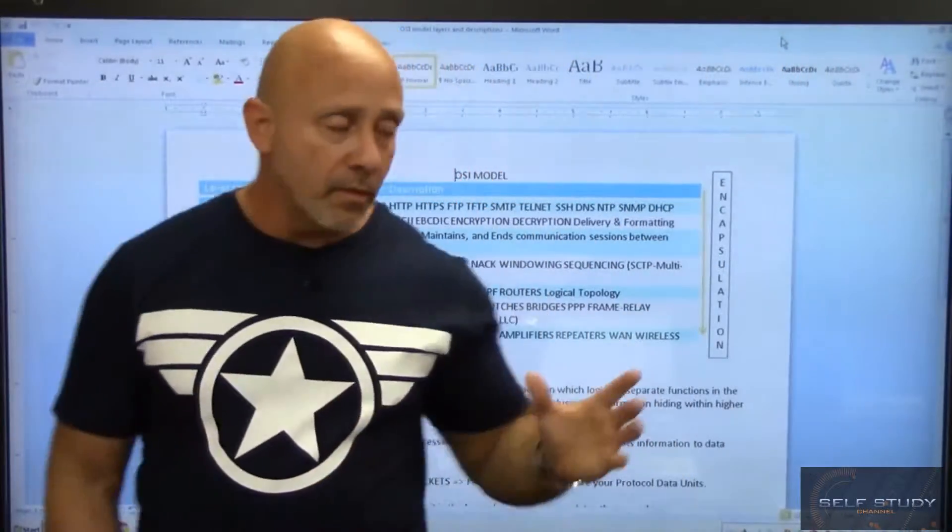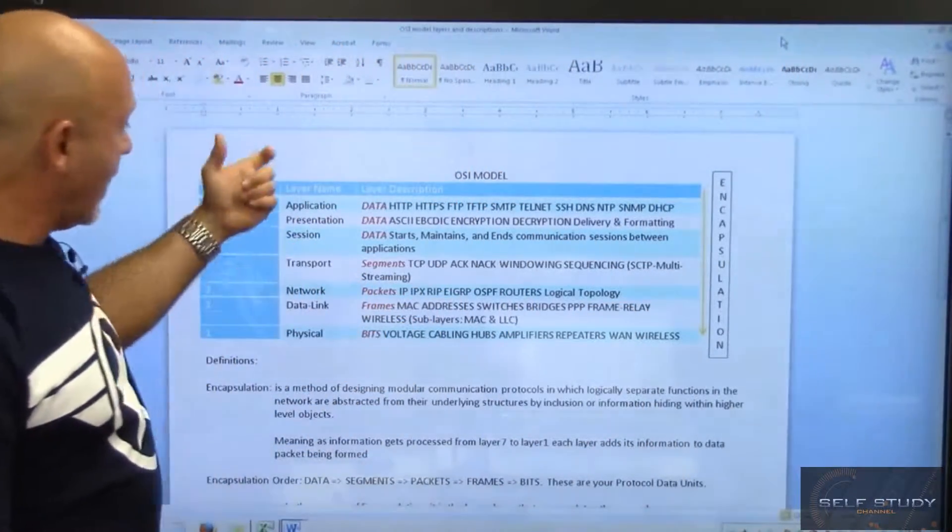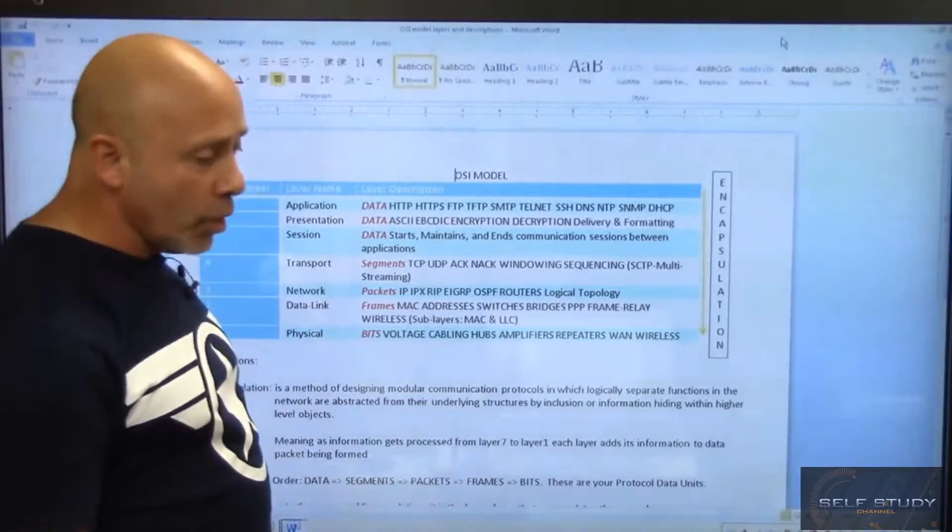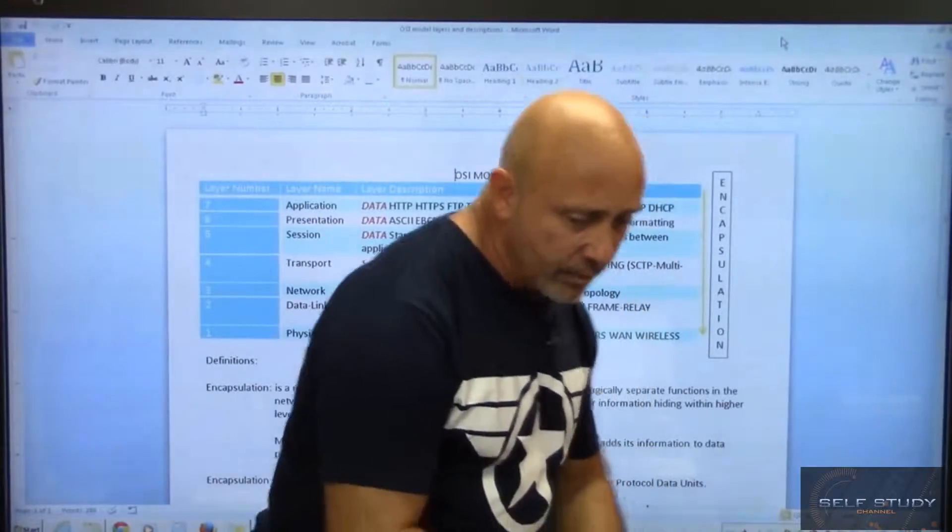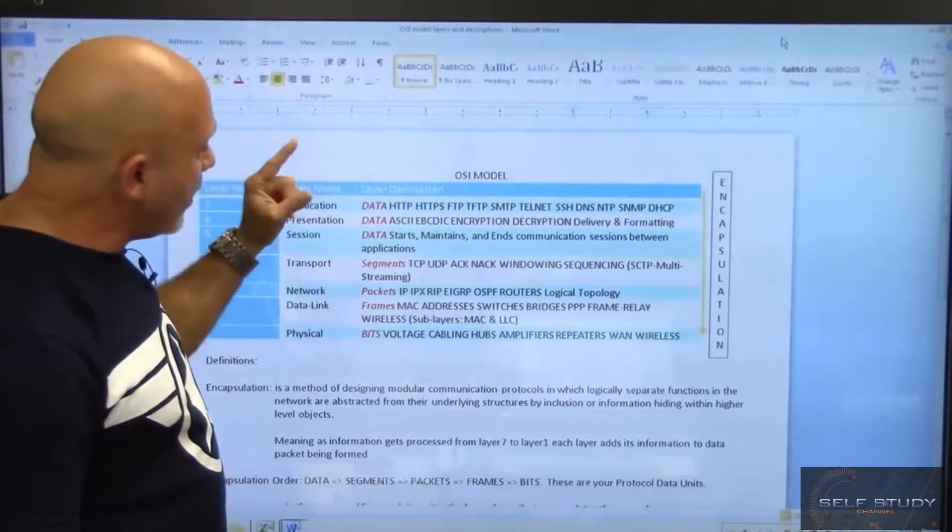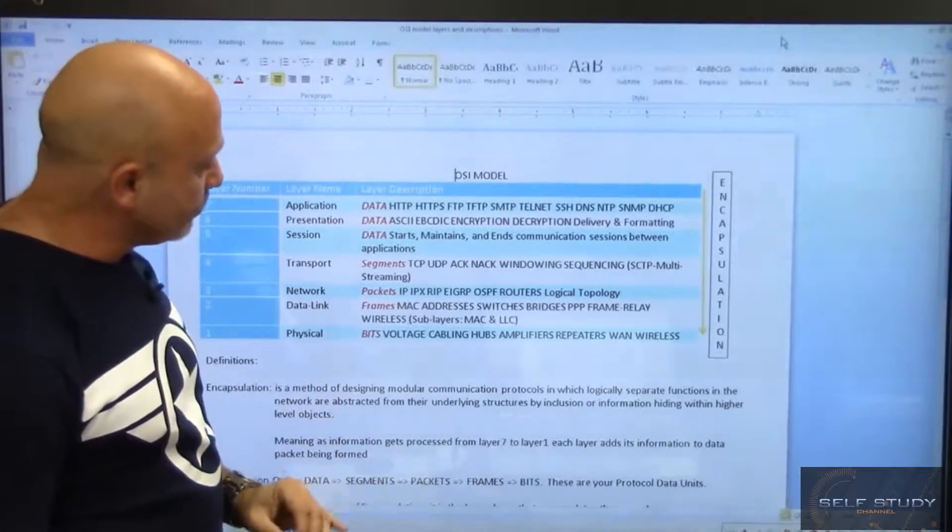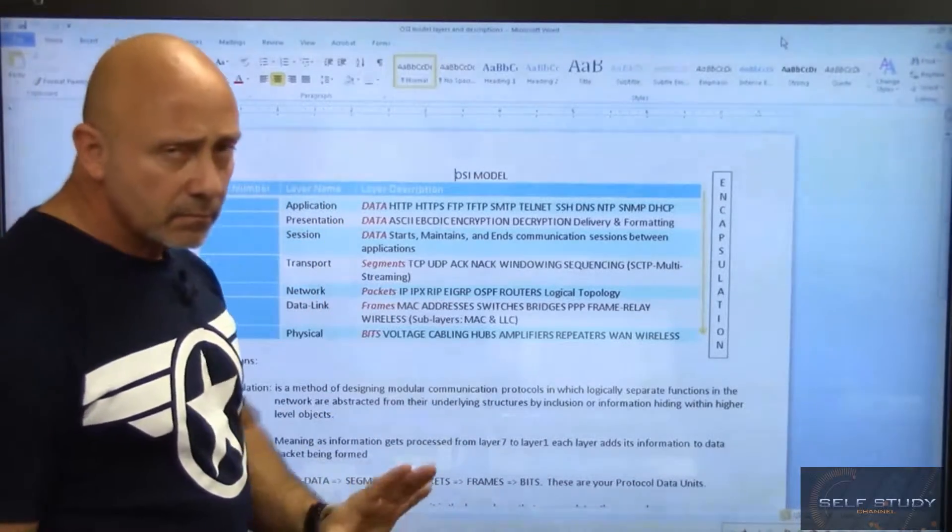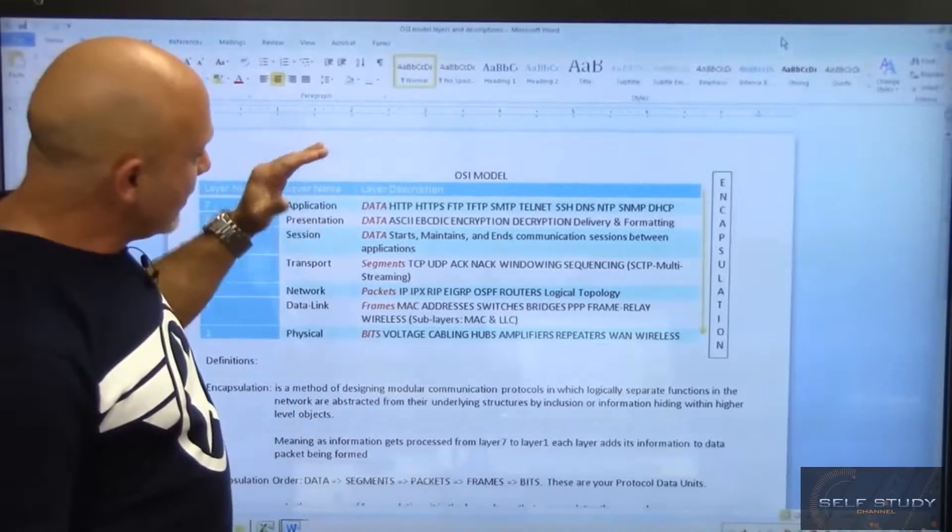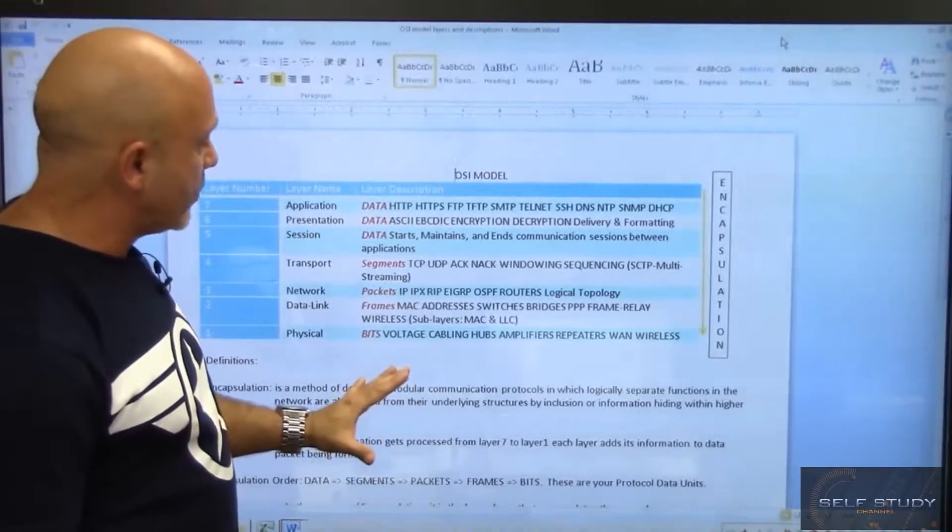Seven layers and each layer has its name. So you need to make sure that you know that. Now, the physical layer. All the letters that you see in red, we'll get that in a little bit. But, these are all the layers. This is everything that works on these layers.